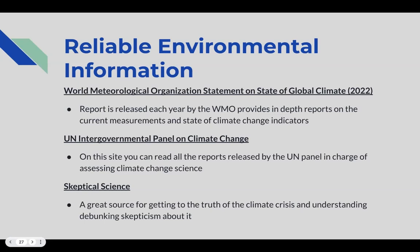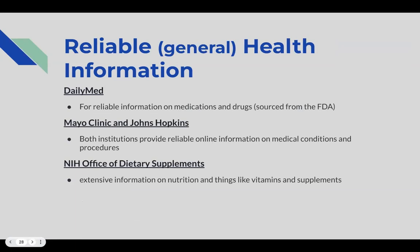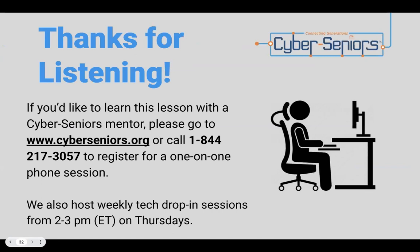For general health information, reliable sources include DailyMed for information about medications or drugs, sourced from the FDA. The Mayo Clinic and Johns Hopkins are institutions that provide reliable online information pertaining to medical conditions and procedures. The NIH Office of Dietary Supplements is also a reliable source for information on nutrition, vitamins, and supplements.